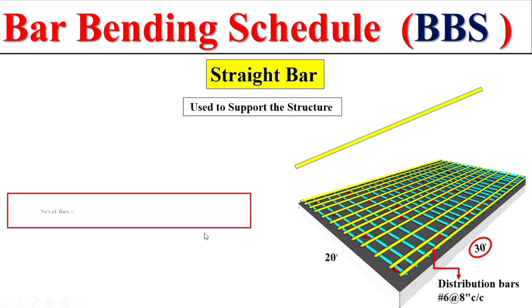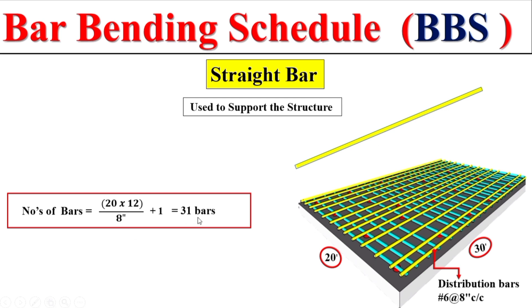To find the total quantity of this distribution bar: first, multiply 20 feet by 12 to convert to inches, then divide by the center-to-center spacing of 8 inches, and add one. So the total number of distribution bars is 31. Since each bar has a length of 30 feet, the total quantity is 31 multiplied by 30 feet. This is how straight bar quantity is calculated in Bar Bending Schedule.